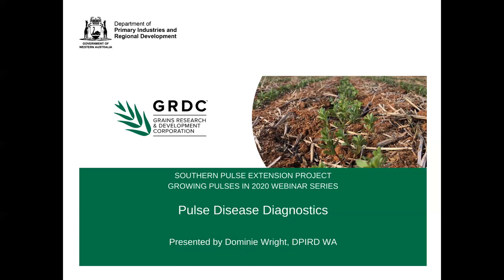I'd like to introduce you all to Domini Wright from DPIRD in Western Australia. She's based in Perth. Domini has over 20 years experience working as a plant pathologist. Domini provides training courses to agribusinesses, consultants, growers and staff on disease identification. She also enjoys running webinars.